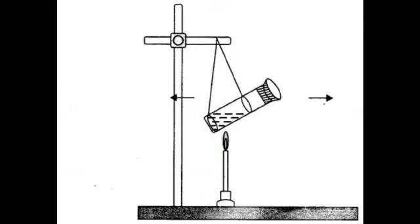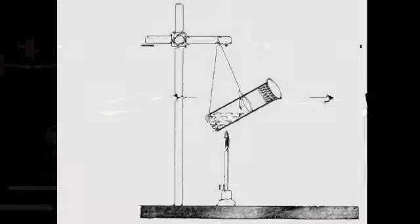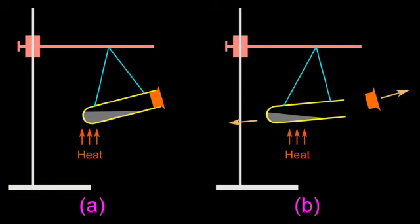Heat the test tube with a burner until water vaporizes and the cork blows out. Observe that the test tube recoils in the direction opposite to the direction of the cork.